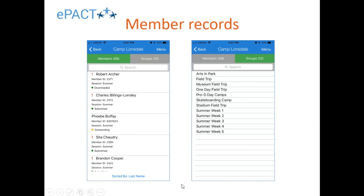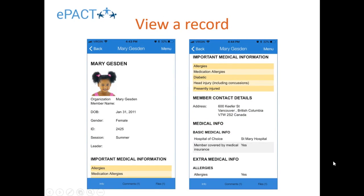Member records in the app look similar to the desktop system — a Members tab shows all members across all groups, and a Groups tab lets you view individual groups and click into them to see the members. Viewing a record, such as adorable Mary here, shows the same information as the desktop version of ePACT but optimized for a phone or tablet.